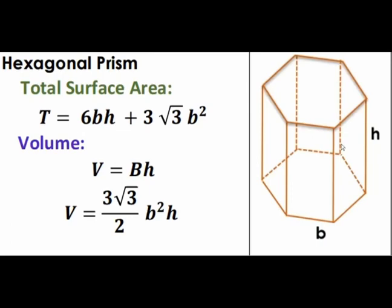A hexagonal prism. For the total surface area of a hexagonal prism, similar to the pentagonal prism, we need to add the two areas of the two hexagons to the areas of the six rectangular faces. The area of a hexagon is 3 times the square root of 3 times B squared over 2, and we have two of them, so that contributes 3 times square root of 3 times B squared. BH is the area of one rectangular face, so that contributes 6BH. Hence, the total surface area is 6BH plus 3 times square root of 3 times B squared.